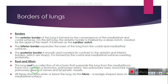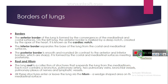The posterior border is formed by the costal and mediastinal surfaces meeting posteriorly. The lung root is a collection of structures that suspend the lung from the mediastinum. Each root contains a bronchus, pulmonary artery, two pulmonary veins, bronchial vessels, pulmonary plexuses of nerves, and lymphatic vessels. All these structures enter or leave the lung via the hilum, which is a wedge-shaped area on the mediastinal surface.